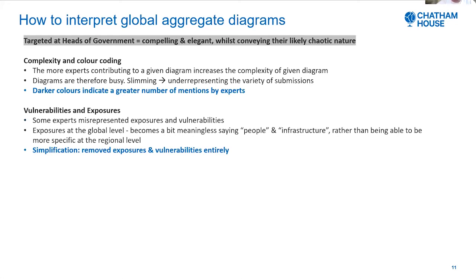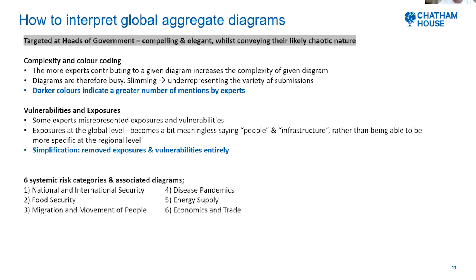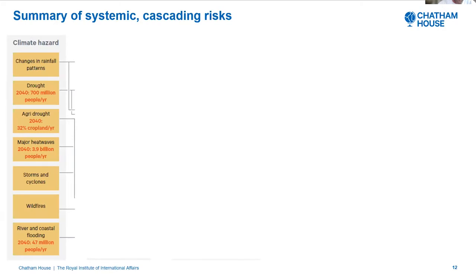In terms of vulnerabilities and exposures, some experts misrepresented or confused exposures and vulnerabilities and didn't necessarily label a given vulnerability or exposure to a given link within the cascade. At the global level, saying 'people and infrastructure' becomes a little meaningless rather than being more specific at the regional level. Our simplification when we aggregated these was to remove those exposures and vulnerabilities entirely. This whole exercise resulted in six systemic risk categories and associated diagrams. This diagram here represents all six cascading risk diagrams boiled down into one, which was really helped by both Lucy and Chris.